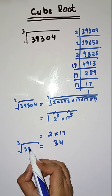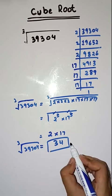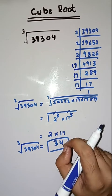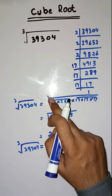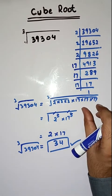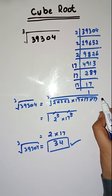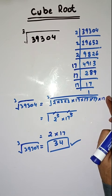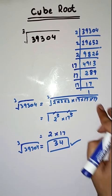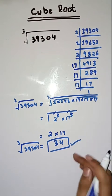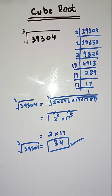So the cube root of 39304 is equal to 34. To summarize: first find the prime factors, then find the groups of three, and multiply them. If you have any doubt you can ask in the comment section. Please like, share, and subscribe to my YouTube channel. Thank you.